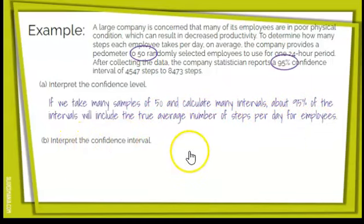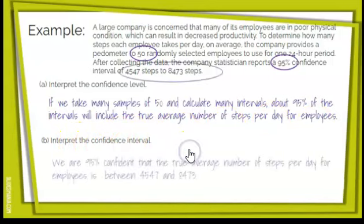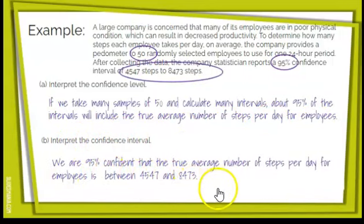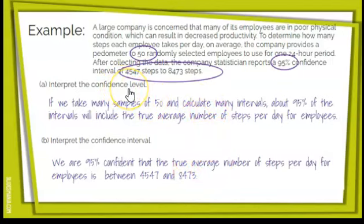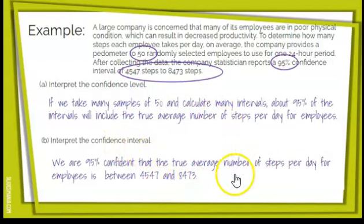Part B: interpret the confidence interval. It says: 'We are 95% confident that the true average number of steps per day for employees is between 4,547 and 8,473.' Observe the difference between a confidence level interpretation and a confidence interval interpretation — they are very different and you need to be able to do both.